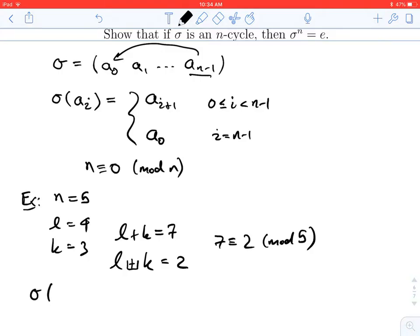Okay, so with this kind of plus box notation, I can rewrite what sigma does. It takes a sub i and it's going to add 1 to the index and then reduce modulo n, which only in the case where i is n minus 1 does it actually mean anything. But I can write it now as a_{i box plus 1}. All right, or at least it's a half box. Okay, so that makes it a little bit easier.